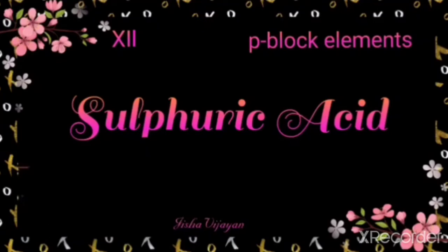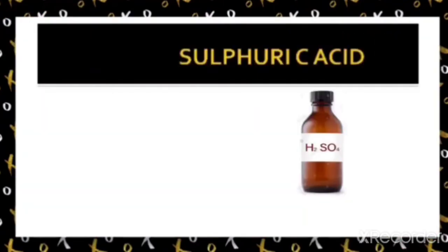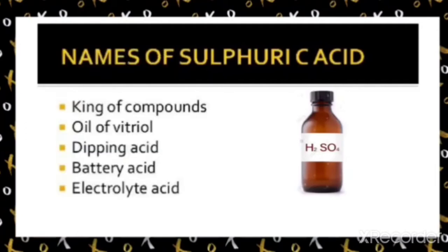Let us discuss an important chemical compound of sulfur — sulfuric acid. Sulfuric acid is one of the most important industrial chemicals because of its various applications, especially in industrial use. It has been given several names: king of chemicals, oil of vitriol, dipping acid, battery acid, and electrolyte acid — all reflecting its importance across various fields.